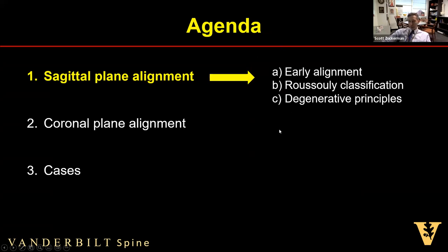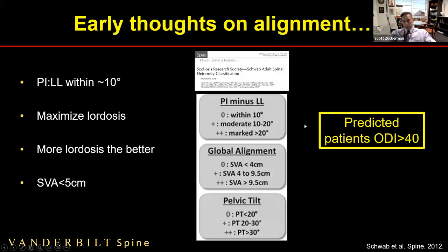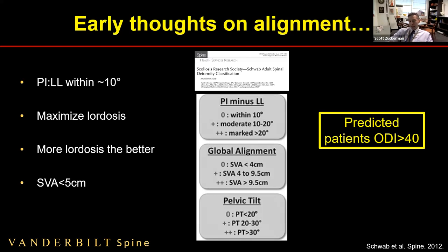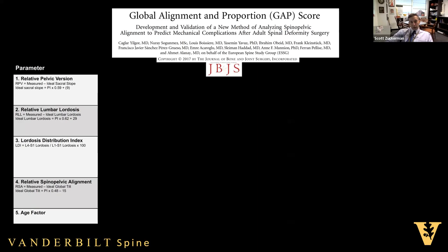Early thoughts on alignment were informed by the SRS-Schwab classification, which really got us thinking about these important concepts. It described that we want PI-LL within plus or minus 10 degrees, SVA less than 5 cm, and pelvic tilt less than 20. This was the standard about 12 years ago, but as we've learned more about the sagittal plane we realized it's somewhat of an oversimplification — still incredibly useful for most PIs, but it came from predicting severely disabled patients, not ideal spinal shape.